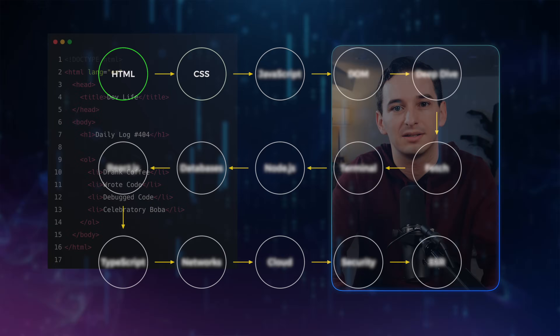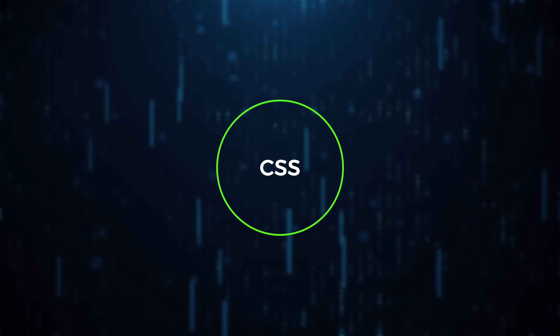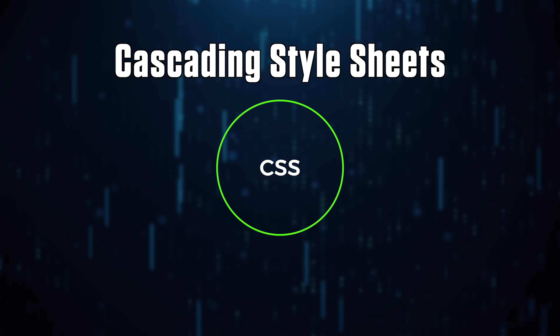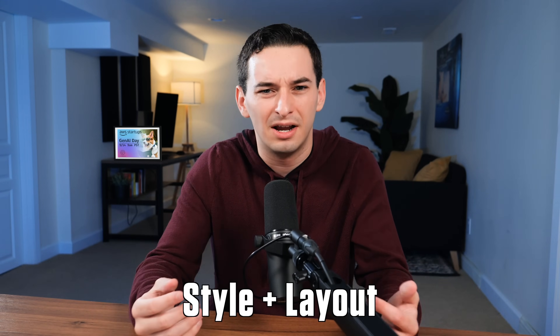You don't need to take a super deep dive here just yet. The goal is just to be able to take some simple text and convert it into a basic HTML document. After HTML, it's time to learn the basics of CSS, or cascading style sheets. This is how we add style and layout to a page.